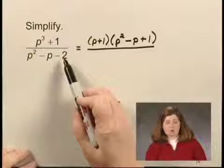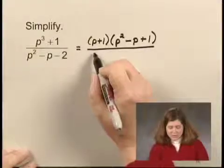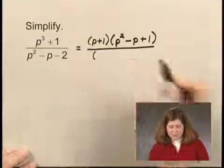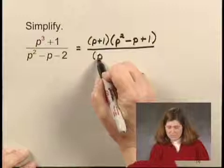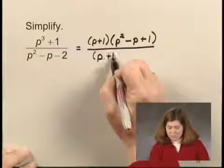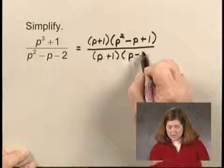The denominator is a trinomial that factors, using some trial and error, into p plus 1 times p minus 2.